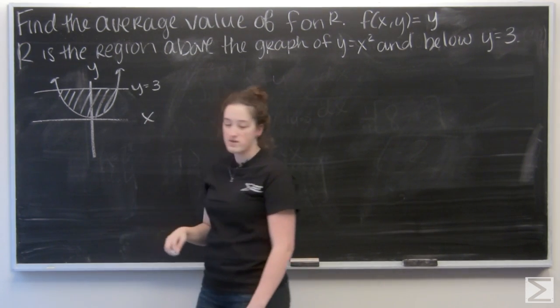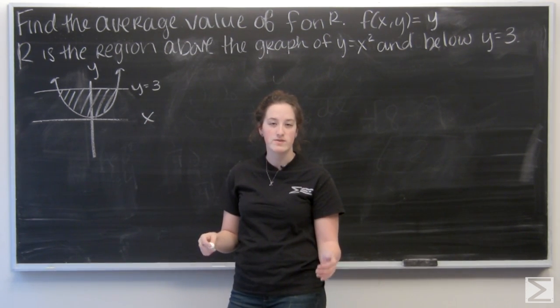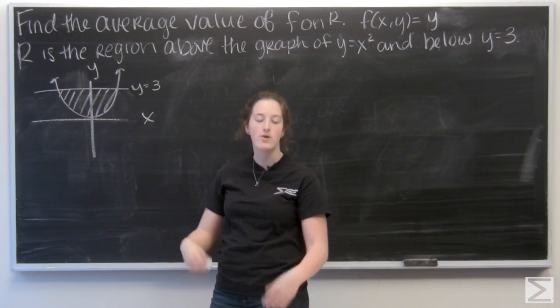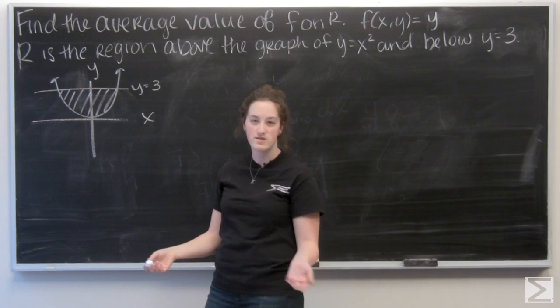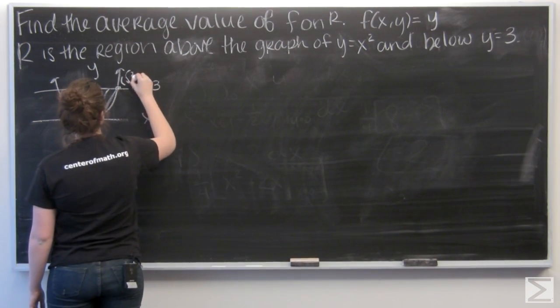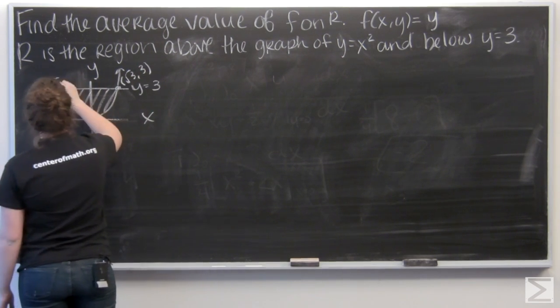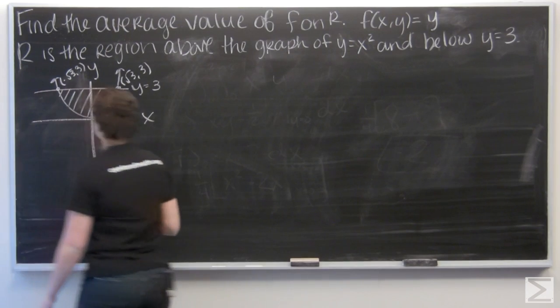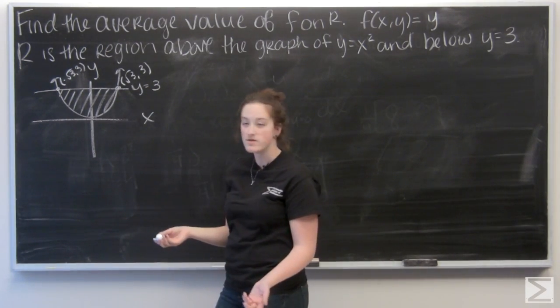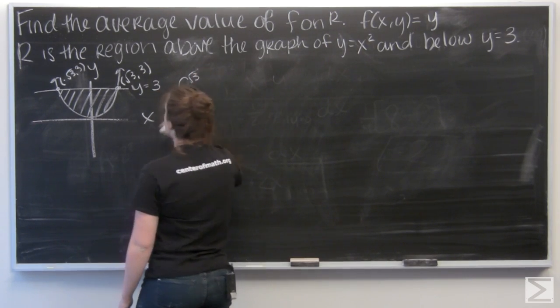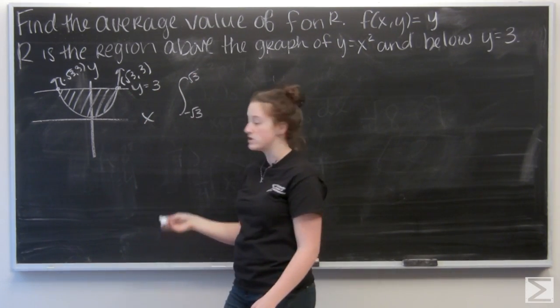I know y equals x squared and the line y equals 3 intersects the parabola when y equals 3. So x equals plus and minus the square root of 3. So let me set up that integral to find the area. Top function minus bottom function.